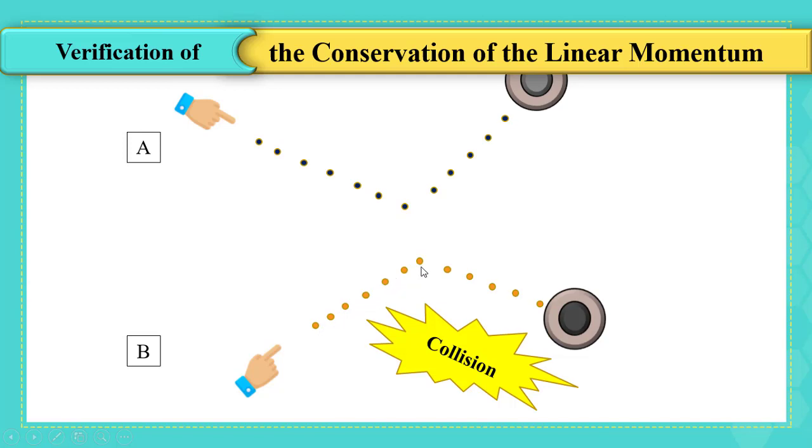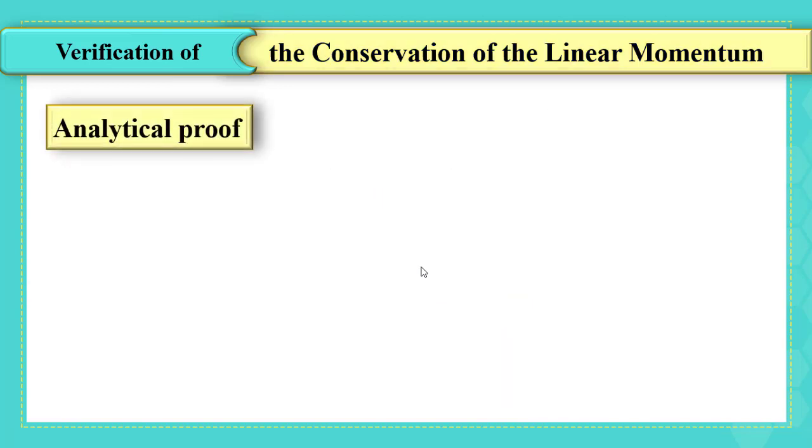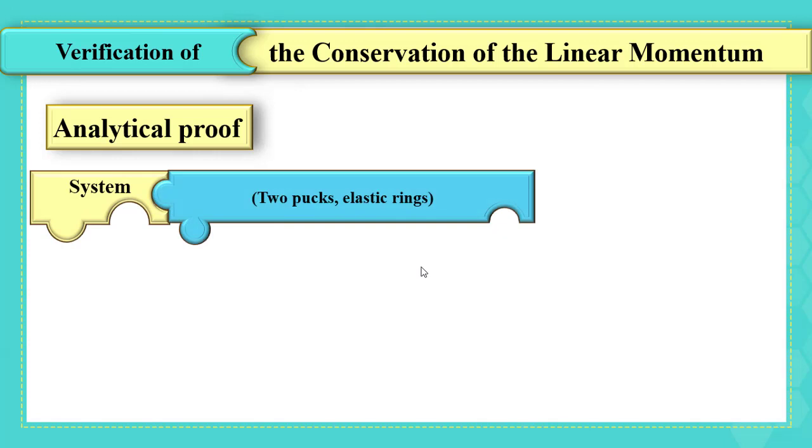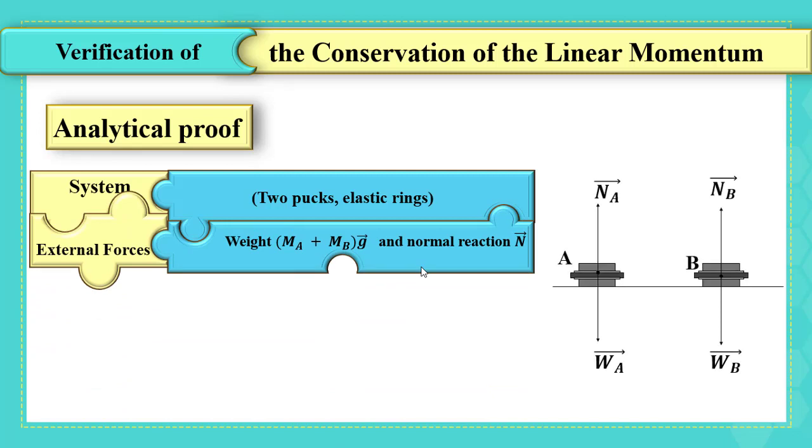Now, making the experimental study, we are going to spot the light on the analytical proof, starting from defining the system that we are studying, which is the two pucks and elastic rings. What are the external forces acting on this system? We have the weight of the system, which is mA plus mB times g, and the normal reaction.